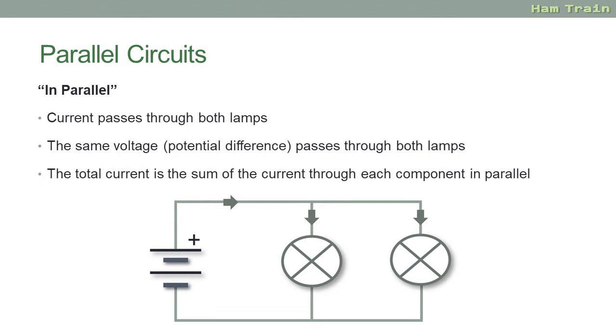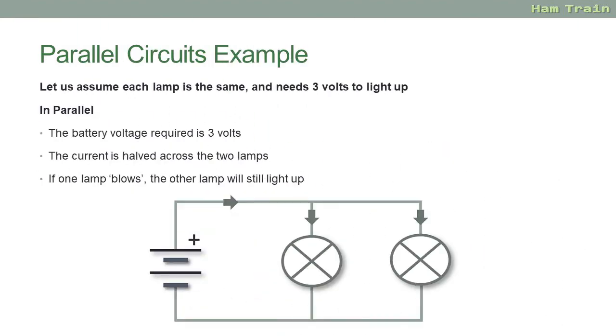This time around it's the current that's reduced. The total current for the circuit is the sum of the current through each of the components in parallel. So let's break that down with an example. In this example again we're going to assume that each lamp is the same and each lamp needs three volts to light up. Because the voltage is the same through both lamps, the supply voltage for the battery is three volts. The current is halved across the two lamps.